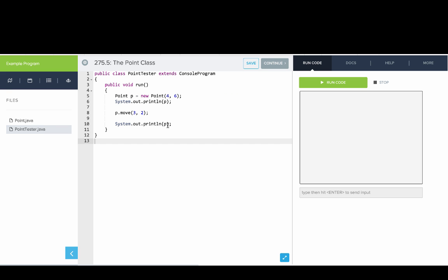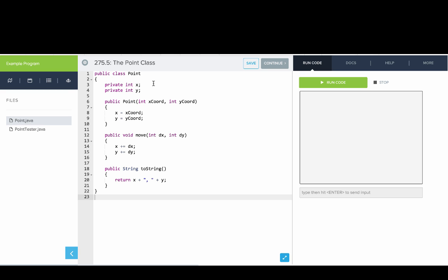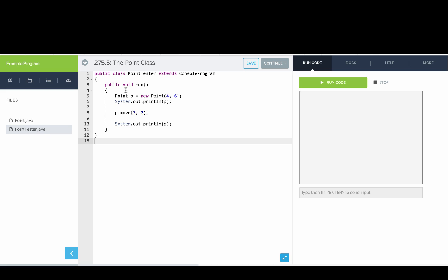So now we're going to go over to this program here. This is a program that represents a point. You can see this is the point class. It's a template for making points. Points have XY coordinates. And here we have a program that's called point tester. What's happening here is we make a new point called P at position four, six, and we print that out. And then we move it and we'll print that out again.